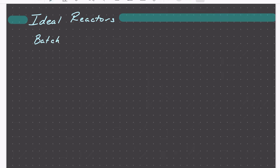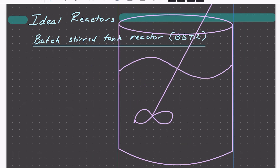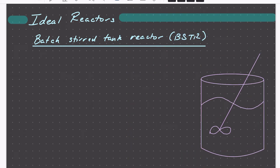We'll start with the batch stirred tank reactor. Let's show a schematic of what this reactor looks like. It looks something like this: we have a closed vessel that's stirred, so we have no flow of species into or out of it. Since it's stirred, we take it to be spatially uniform, so there are no gradients in concentration or temperature within the reactor.